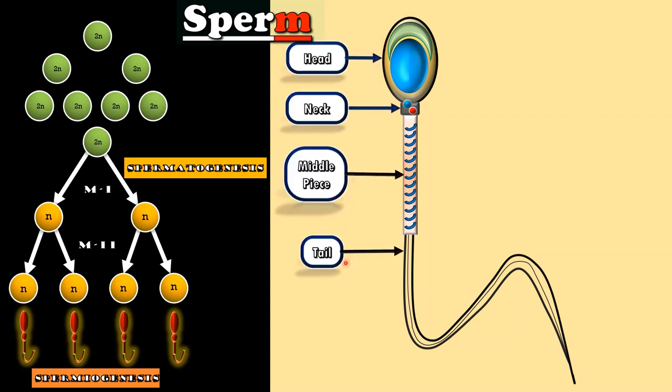Head is 5 micrometer in length. It contains haploid nucleus and acrosome. This acrosome is modified Golgi body.